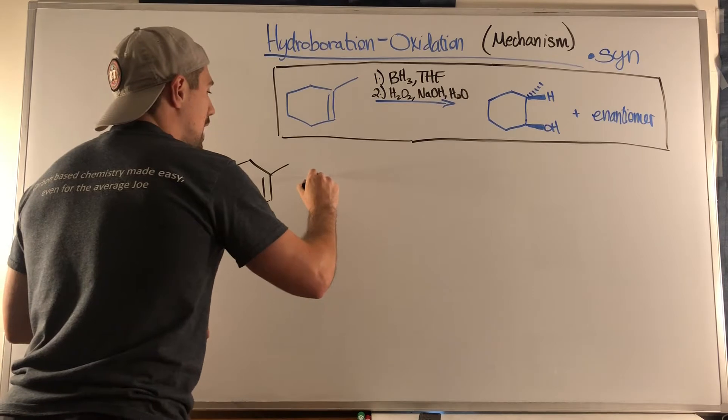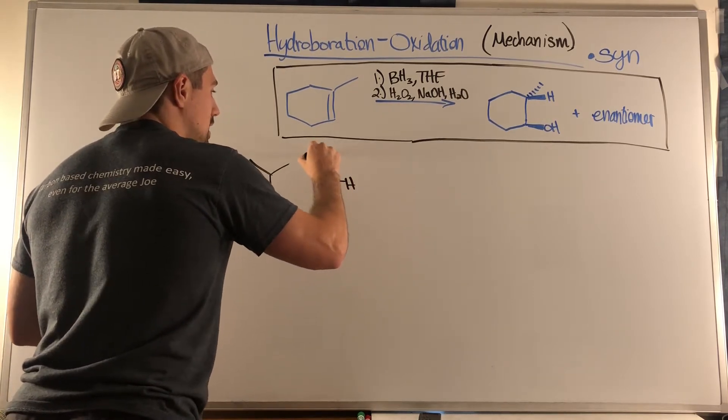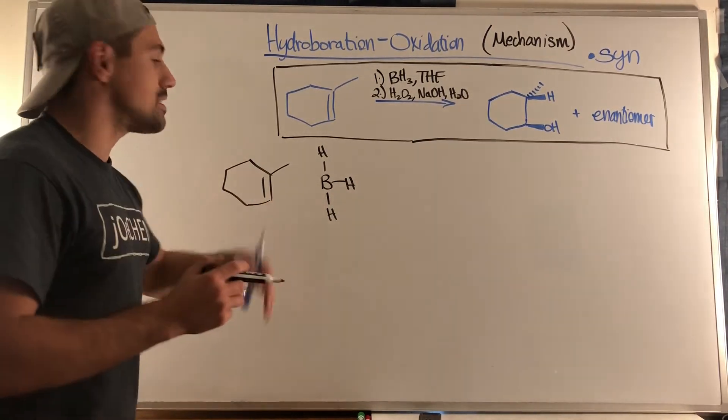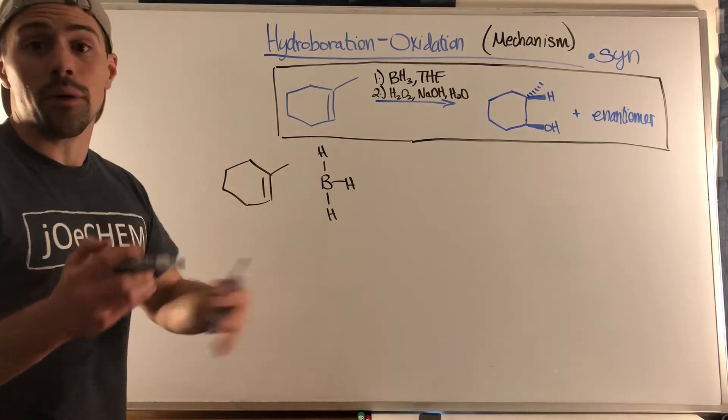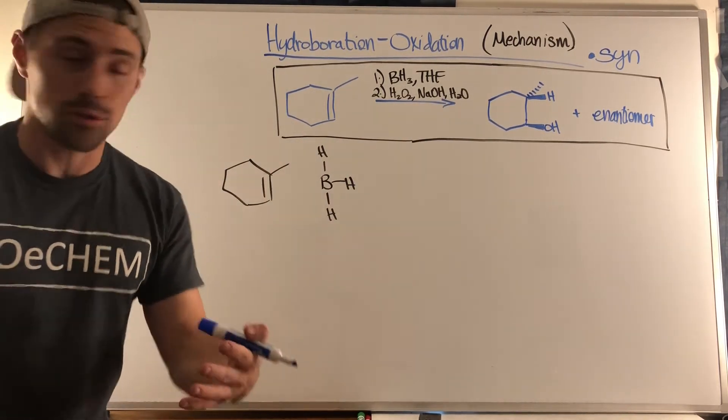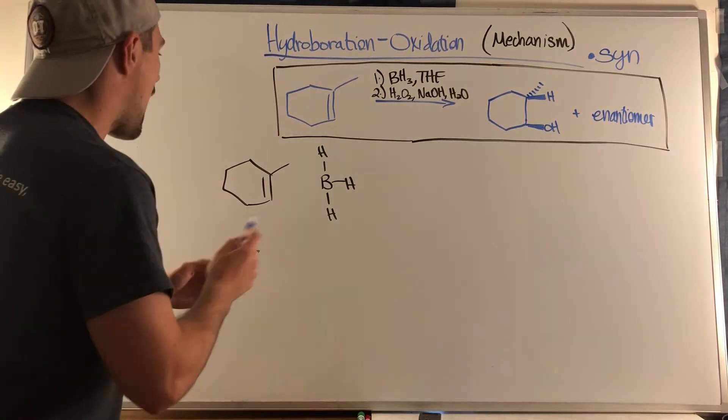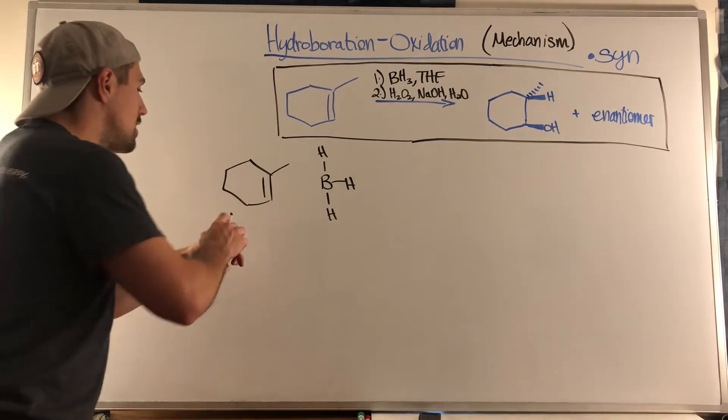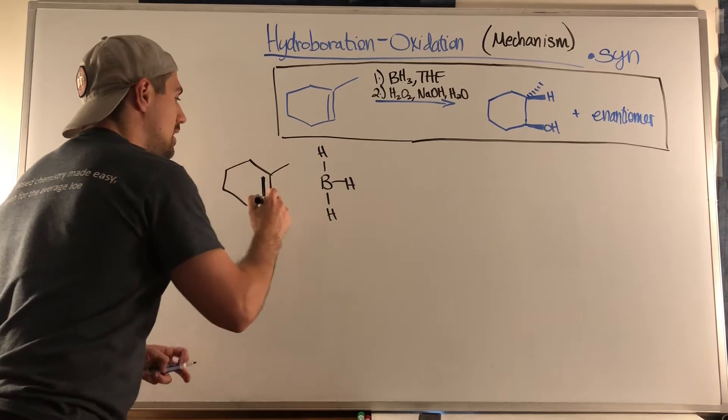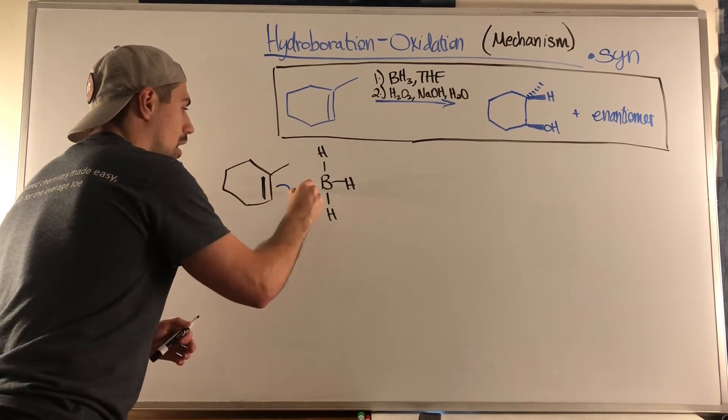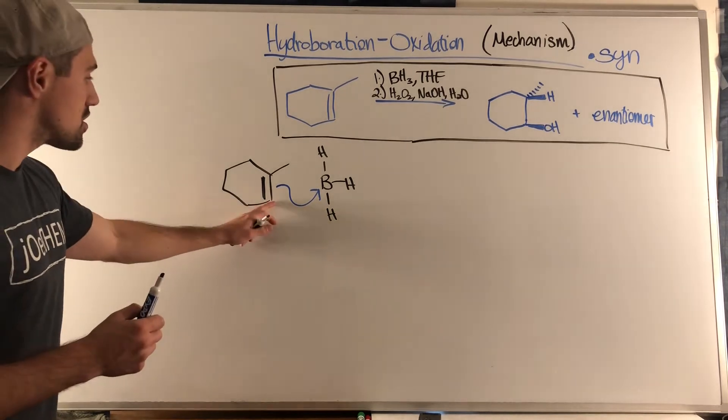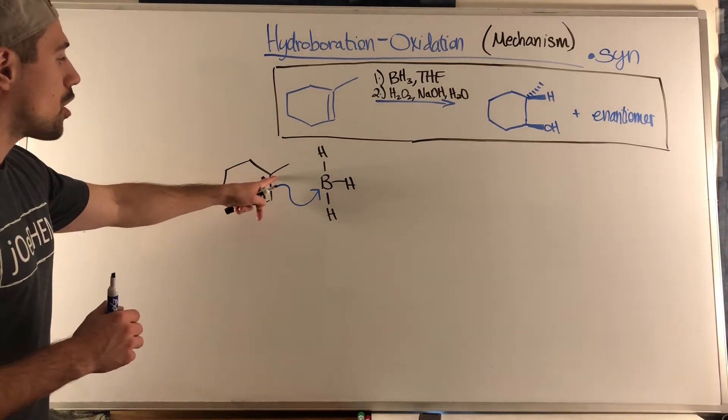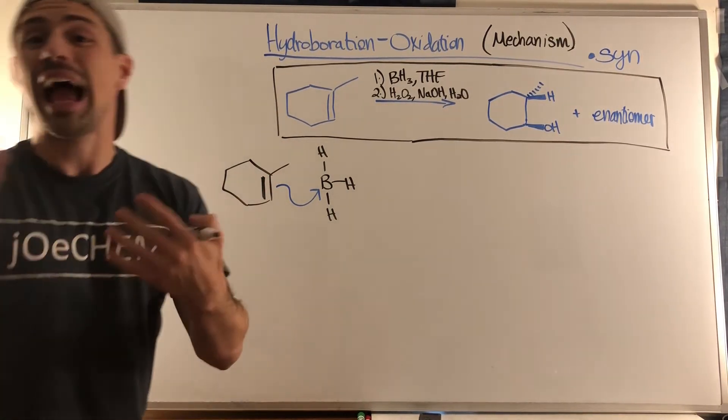So the very first thing is that you're going to have your BH3. Now it's important to note boron being one of those loonies in the third column of the periodic table. It has an empty valence electron shell potential. It can accept a bond. So what's going to happen is the lesser substituted carbon in this double bond will command the two electrons in the double bond. It will reach out and it will start to bond to boron. It can accept the electrons. This is the carbon. It's going to take the electrons.